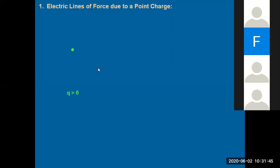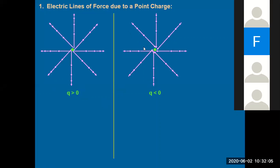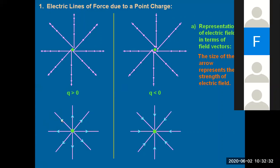For a positive charge where q is greater than zero, the lines of force are directed outwards. For a negative charge, the lines are directed in the inward direction. Positive means the arrow mark should be outwards; negative means the arrow mark should be inwards. The number of arrow marks also denotes the strength — fewer arrow marks means less strength, more arrow marks means greater strength.